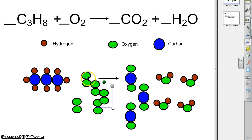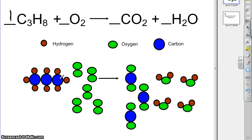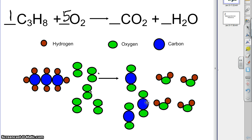So we need ten on the left, and there we go — I believe everything is balanced now if we count everything up. We have one propane molecule, so we could write the number one right here, but we don't usually — the one is assumed, so we'll usually leave that blank, though if you put a one it won't be wrong. Then we have five O2 molecules. What about the carbon dioxides? We have three of those. And we have four water molecules.